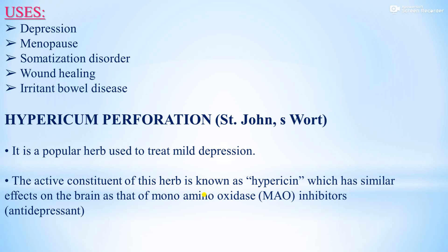Hypericum perforatum, also known as St. John's Wort, is a popular herb used to treat mild depression. The active constituent of this herb is known as hypericin, which has similar effects on the brain as monoamine oxidase (MAO) inhibitors, acting as an antidepressant.